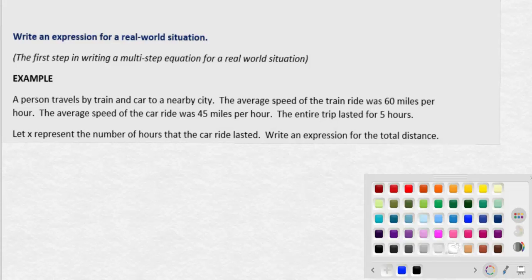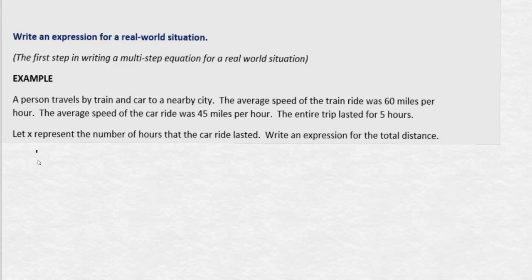The first thing to keep in mind is that whenever we're talking about speeds of cars and trains and traveling and miles per hour and that sort of thing, we're going to be using the formula distance equals rate times time, or d equals r times t.